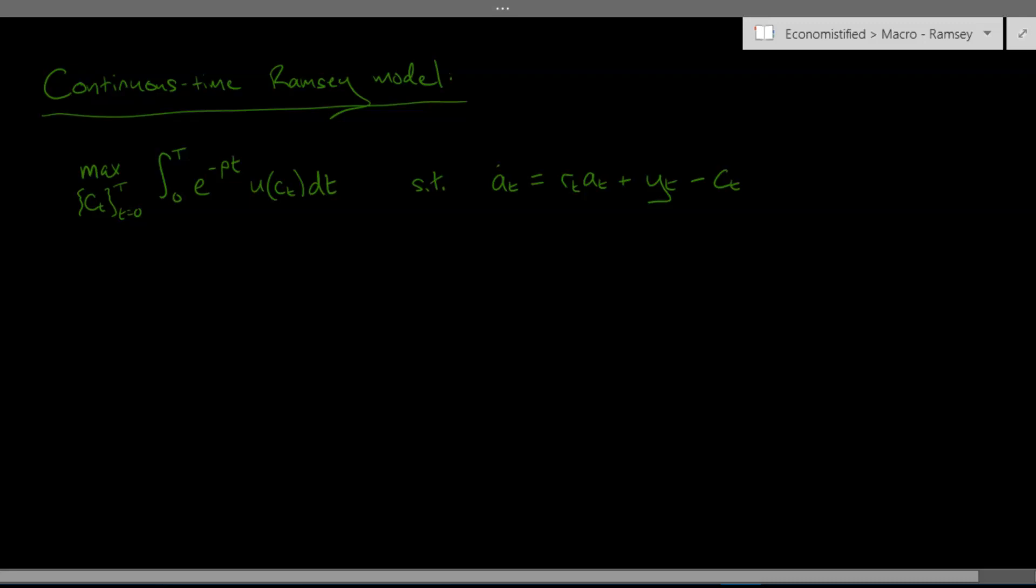But before we do that I just want to do something with this budget constraint because at the moment it's in the flow form. Your wealth evolves over time according to this equation but I want to get it in integral form and convert it into a lifetime budget constraint.